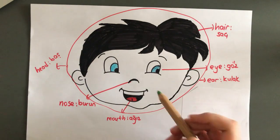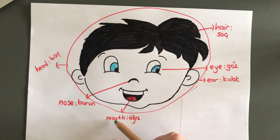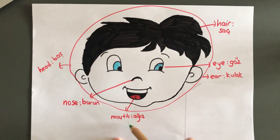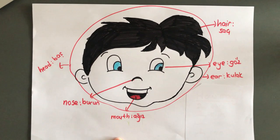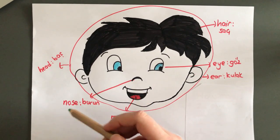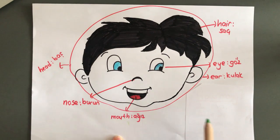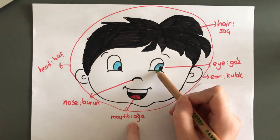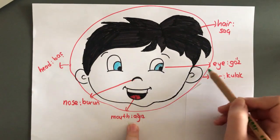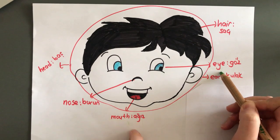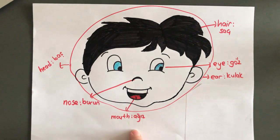This is a mouth. Mouth. This is a nose. Nose. Burun. This is an eye. Eye. Göz.